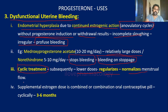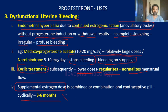Supplemental estrogen doses combined, or a combination of oral contraceptive pills, are used cyclically for 3 to 6 months. Alternatively, you can choose a progesterone with some inherent estrogenic activity to treat dysfunctional uterine bleeding.